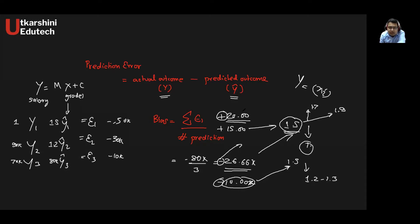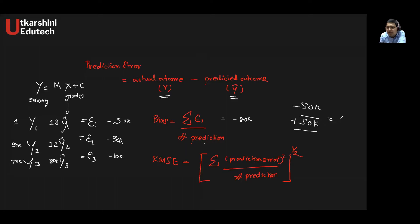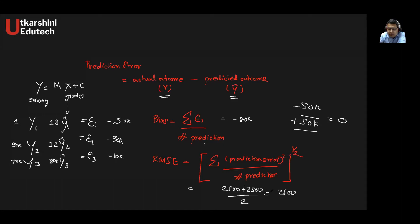Another common measure is Root Mean Square Error, or RMSE. Instead of just adding the errors, we square each error before summing them. The key difference is: if I have an error of minus 50 and another of plus 50, my bias would be zero — suggesting no bias. But with RMSE, squaring gives 2500 plus 2500 divided by 2, then square-rooted, which equals 50. So RMSE correctly reflects that errors of 50 are being made.